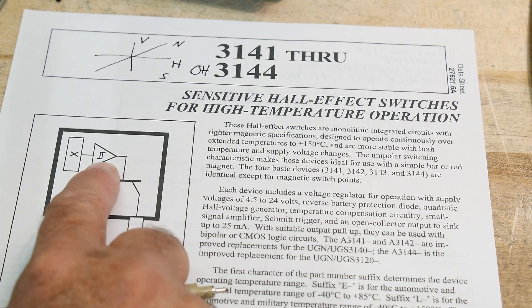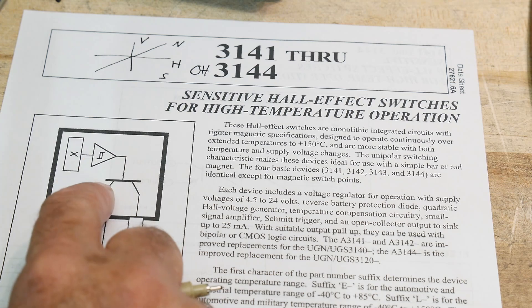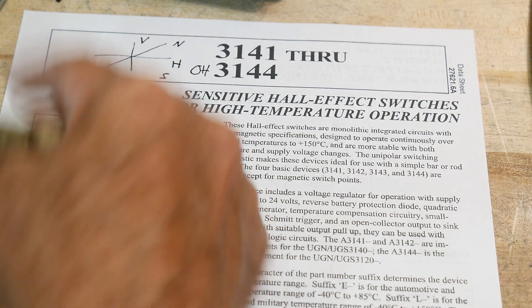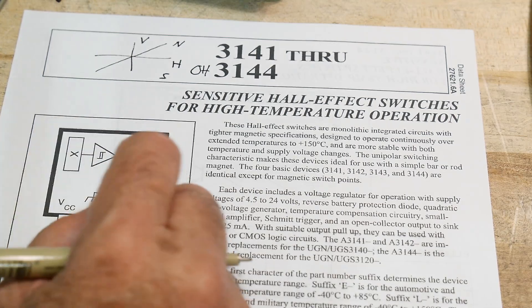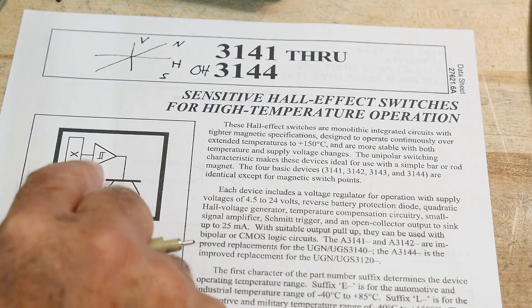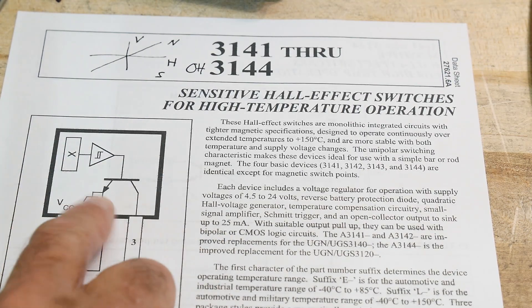It goes into a Schmidt trigger. So if the magnetic field is over a certain amount, it'll fire. And then it has to go down a certain amount before it unfires. So ones and zeros. It'll give you a one if the magnetic field is high, give you a zero if the magnetic field is low. And this hysteresis is built into the Schmidt trigger. And then it fires an open collector output. So it's just a three-pin device.